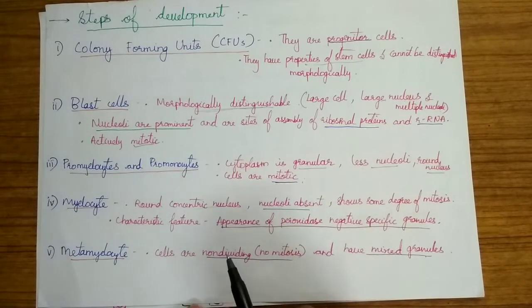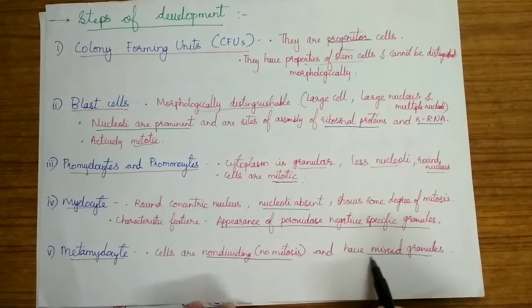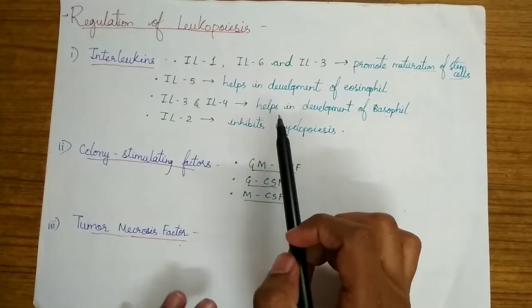Metamyelocyte: in this stage, the cells stop dividing and there is no mitosis and they have mixed granules. Let's talk about the regulation of leukopoiesis.